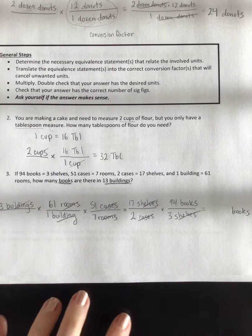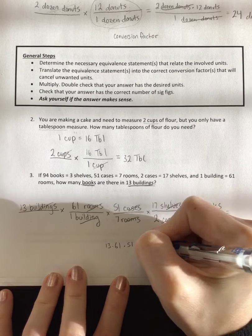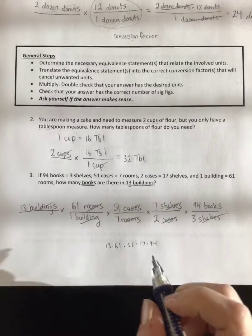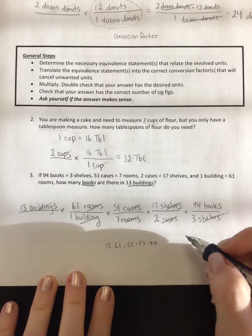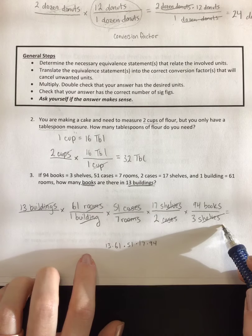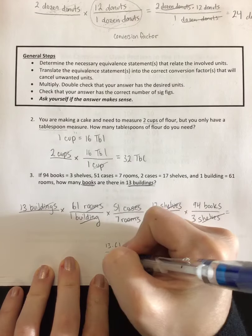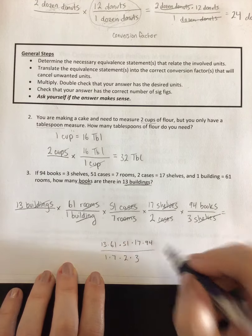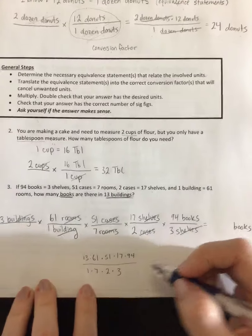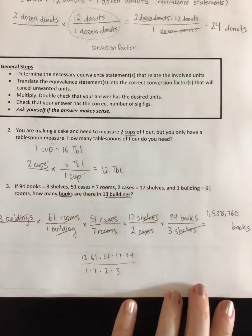Now we need to do the actual number. So, in your calculator, you would need to do something like 13 times 61 times 51 times 17 times 94. And remember not to just go through on your calculator and hit divide. Or I think the best way to do it is just to put this in your calculator, get a number, hit enter, clear it, and then go through and do 1 times 7 times 2 times 3. Get a different number, divide them. And then you should get, if you do it correctly, 1,538,760 books.